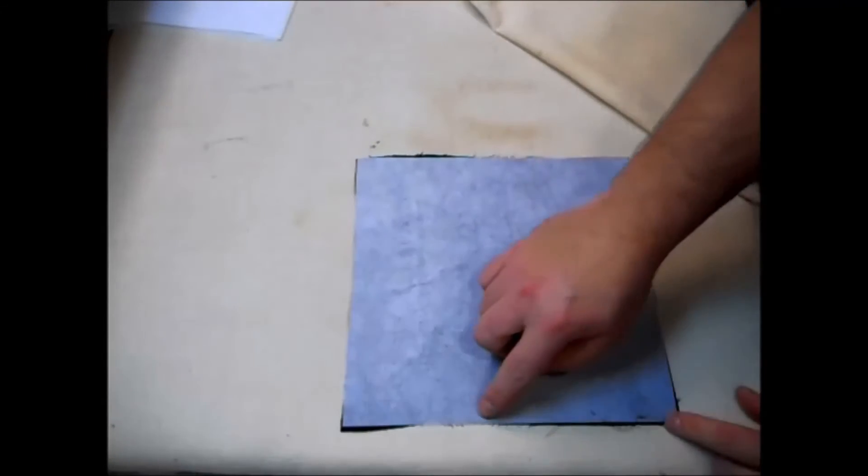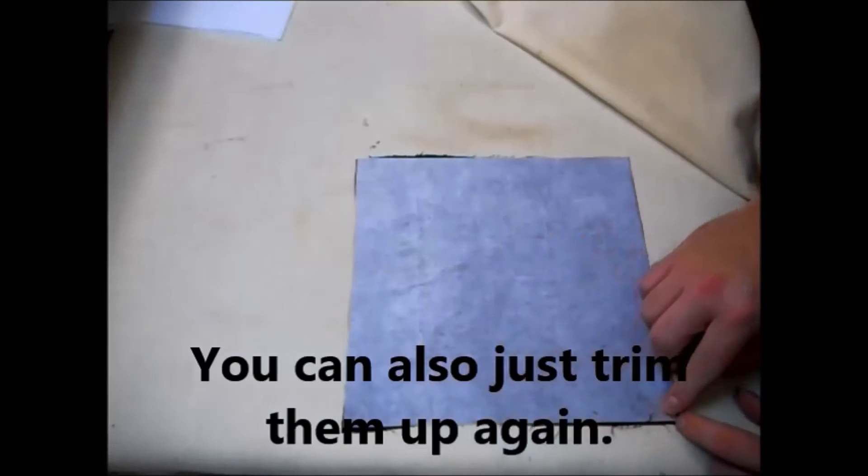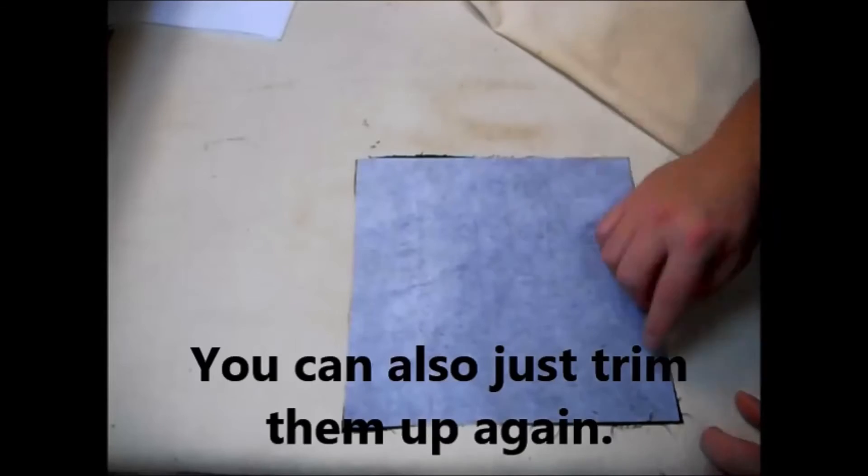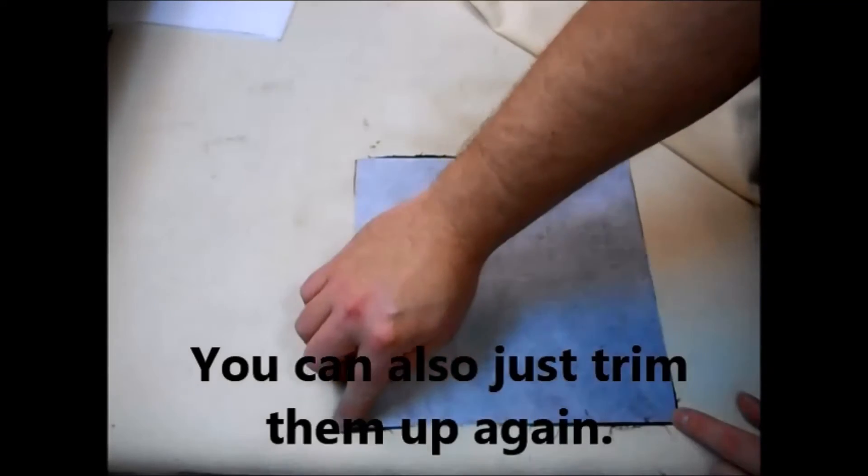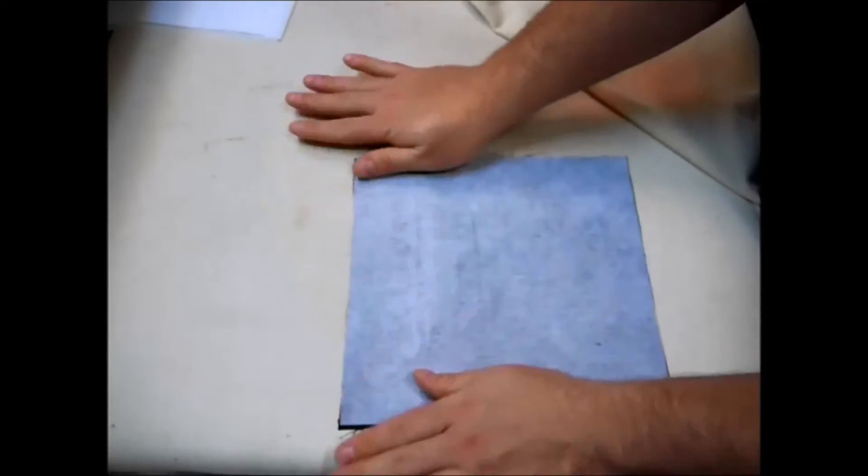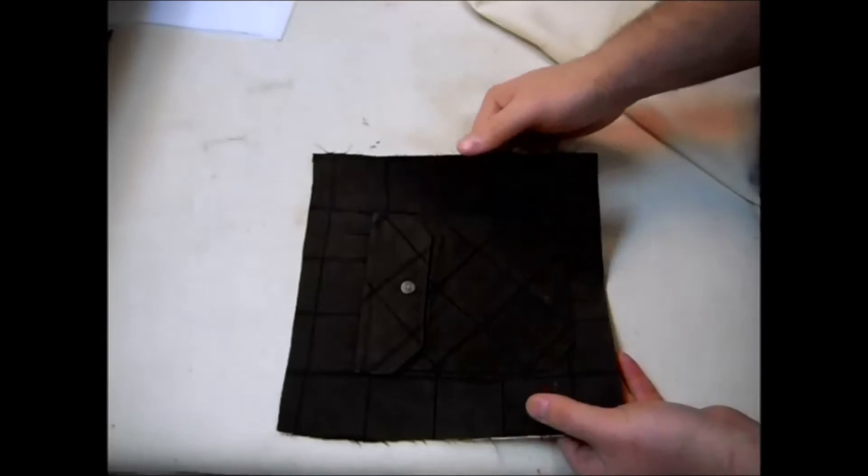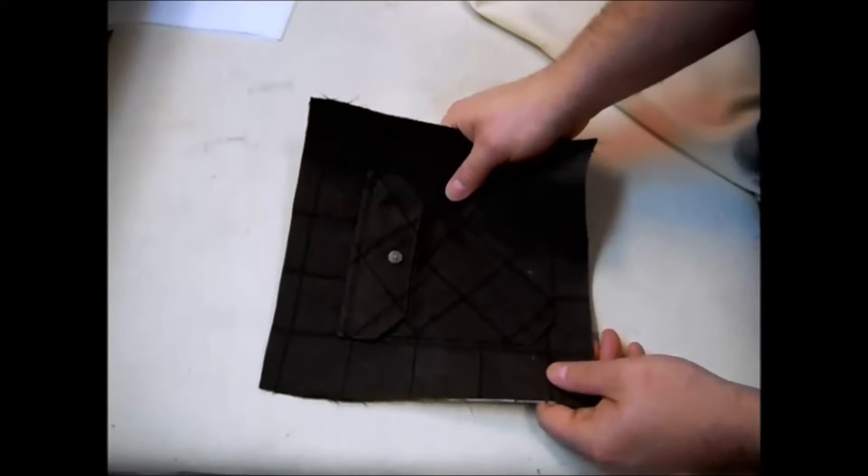Now as you can see sometimes your squares will get a little wonky. That's just fine. When you sew these together just make sure you follow the straight line on the pellon. Now I'll just set this off to the side and I have 47 more to go.